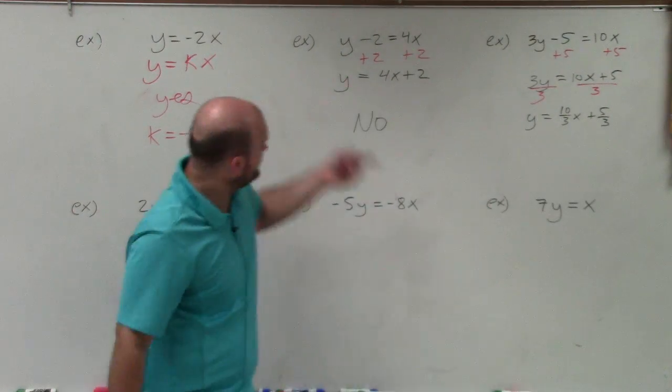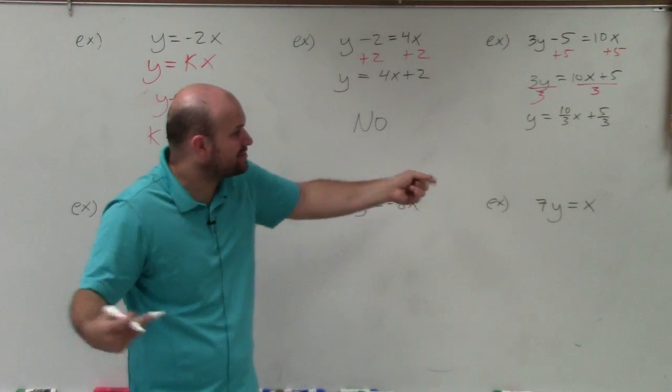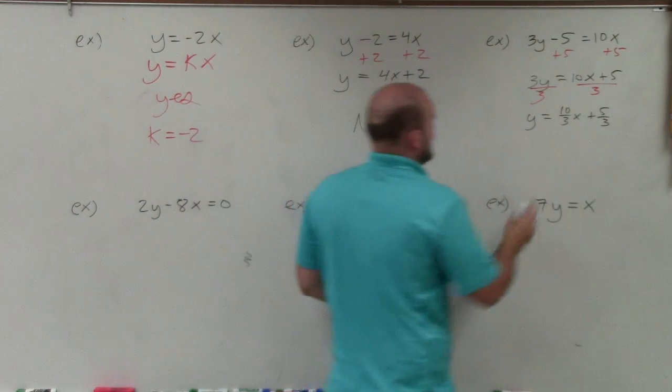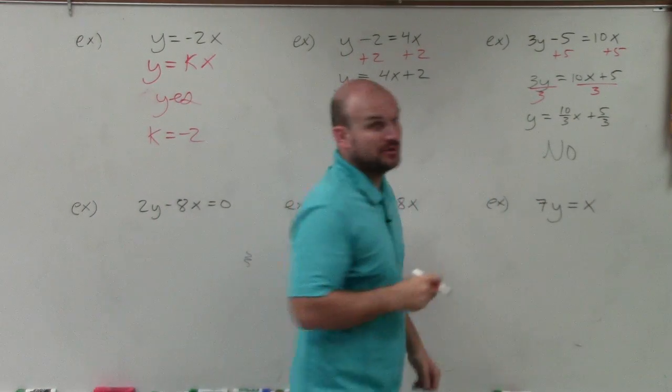Well, again, you're having adding, right? You can't add or subtract. Direct variation is just k times your variable x. So that is not an example of direct variation.